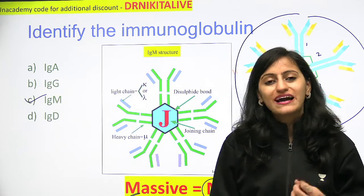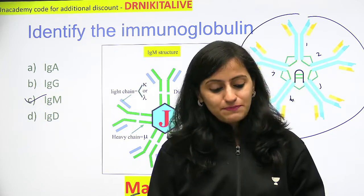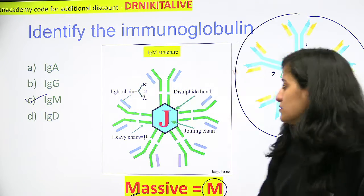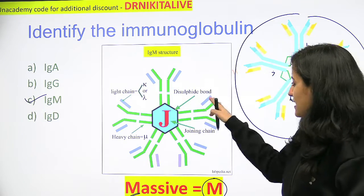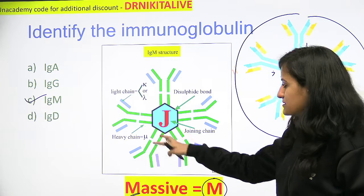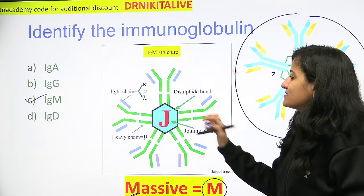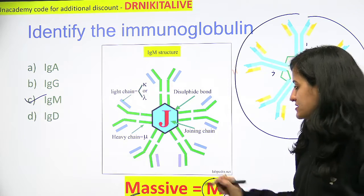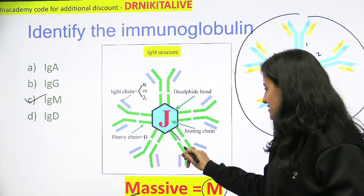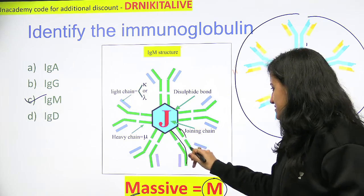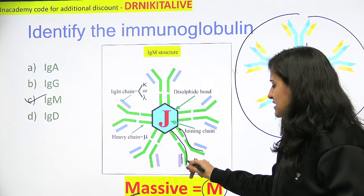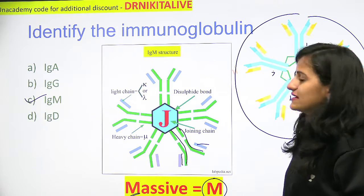IgM is a pentamer that has five immunoglobulin structures connected by joining chains. These are the heavy chains, and these are the light chains.